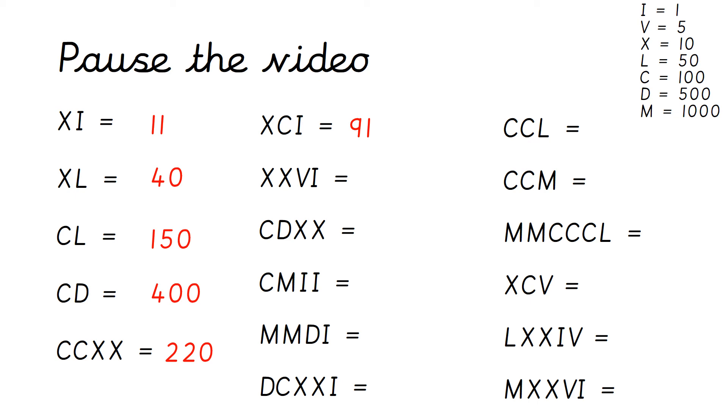Now we get to the more trickier ones. So we've got XXVI, which would be 26. So you've got X, add X, add V, add I. Because they are going from largest to smallest. After this one, we've got CDXX, which would be 420. CMII, which would be 902. MMDI, which would be 2501. DCXXI, which would be 621.